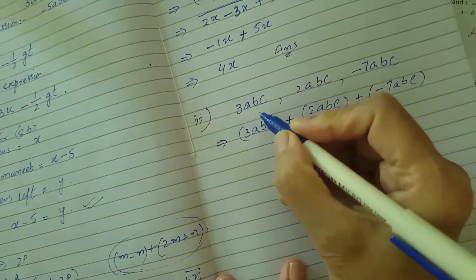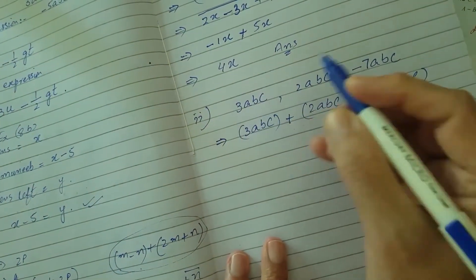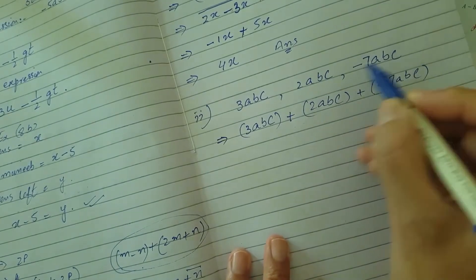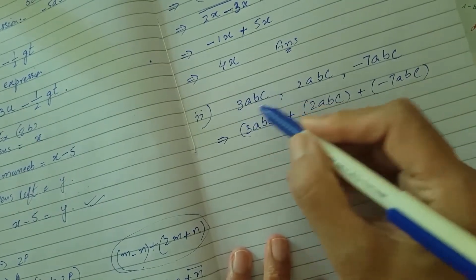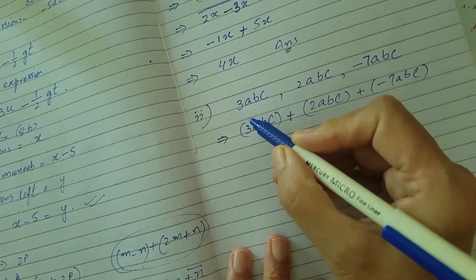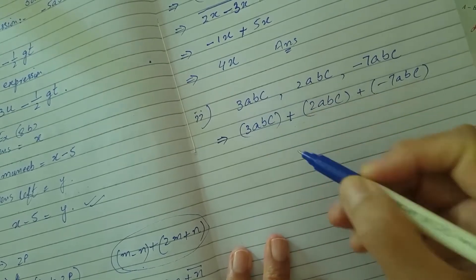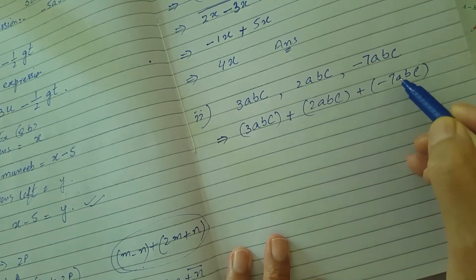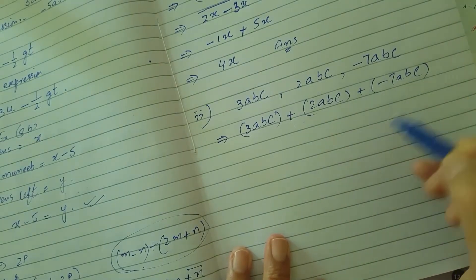Second part of second question: you have to add three given expressions having only one term in each. The first term is 3ABC, second is 2ABC, and the third term is minus 7ABC.